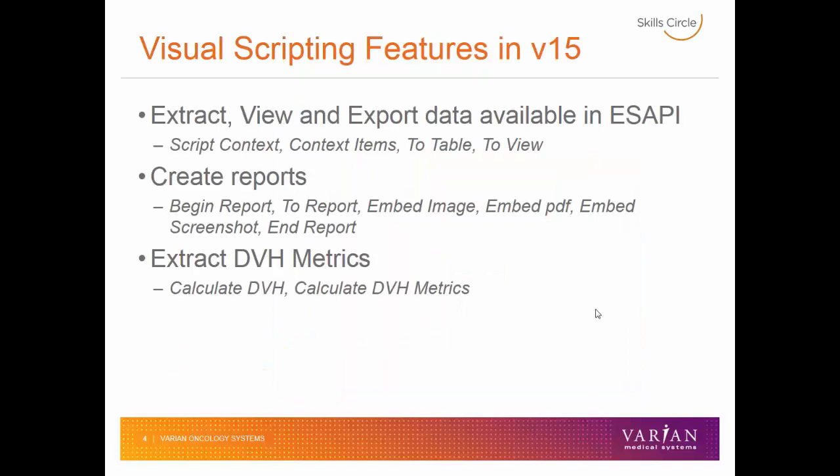Some of the currently available features in Visual Scripting are worth going over. In Visual Scripting, we can extract, view, and export data that's currently available with the Eclipse Scripting API. This is done through the script context in the Eclipse Scripting API, but we have shortcut context items in Visual Scripting to make this easier. This data can then be sent to a table to organize the data, or to a view to show the data to the user.